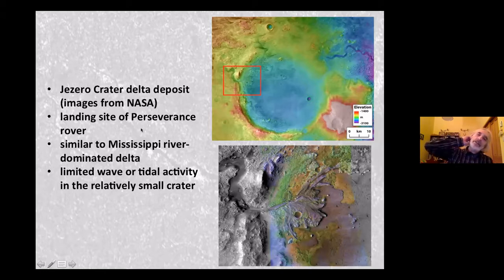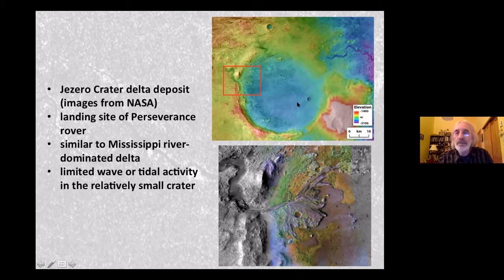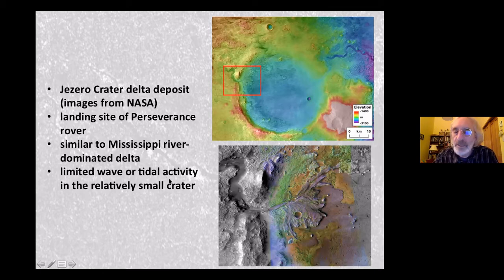Jezero Crater is the landing site of the Perseverance Rover and where they are focusing their search for microbial life, mainly because of the deltaic deposit there. A close-up shows the river channel coming through with various distributary channels — almost a bird's-foot morphology — consistent with a river-dominated delta, since you wouldn't expect significant waves in this relatively small 50-kilometer basin, nor tides from the Martian moons.